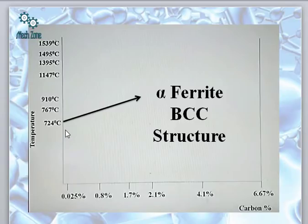We are simply increasing the temperature of the iron and reaching up to 724 degrees, and at 724 degrees the state or phase of iron that is obtained is called alpha ferrite, having the BCC structure.